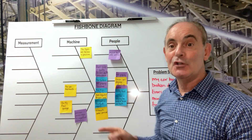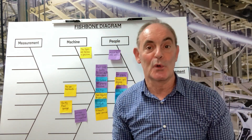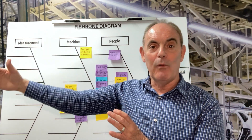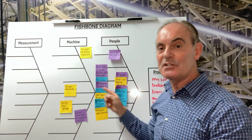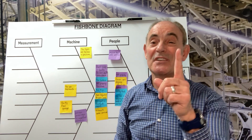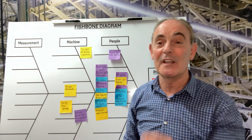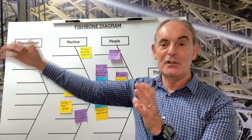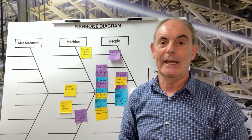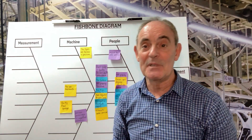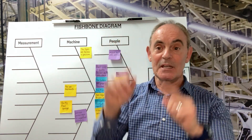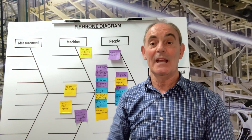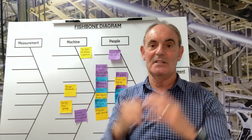Tip number five is when you pick the top two groups to determine the root cause — either by undertaking a five whys, putting these two through a five whys, or if the team is confident they've identified the root cause, you can go straight to creating actions.